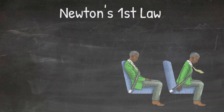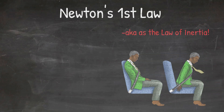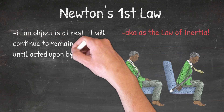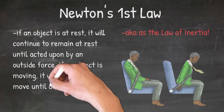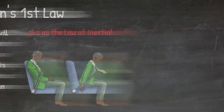To summarize, Newton's first law is also known as the law of inertia. This means that if an object is at rest, it will continue to remain at rest until acted upon by an outside force. If an object is moving, it will continue to move until acted upon by an outside force. Now you know Newton's first law of motion.